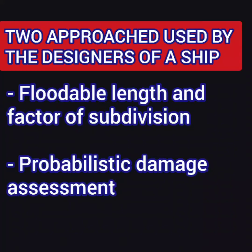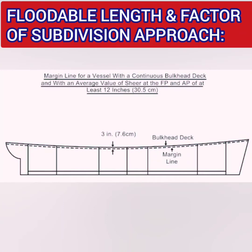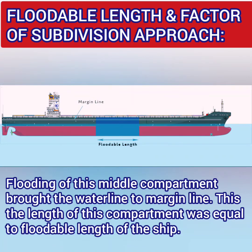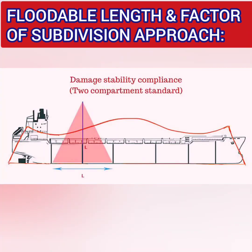Floodable length basically means the length of a compartment which, if flooded, will cause the ship to sink up to the margin line. The margin line is an imaginary line parallel to the freeboard deck, 76 mm below it. So if one compartment gets breached and water starts to enter, and the waterline in that area reaches the margin line, then the length of that compartment was equal to the floodable length.